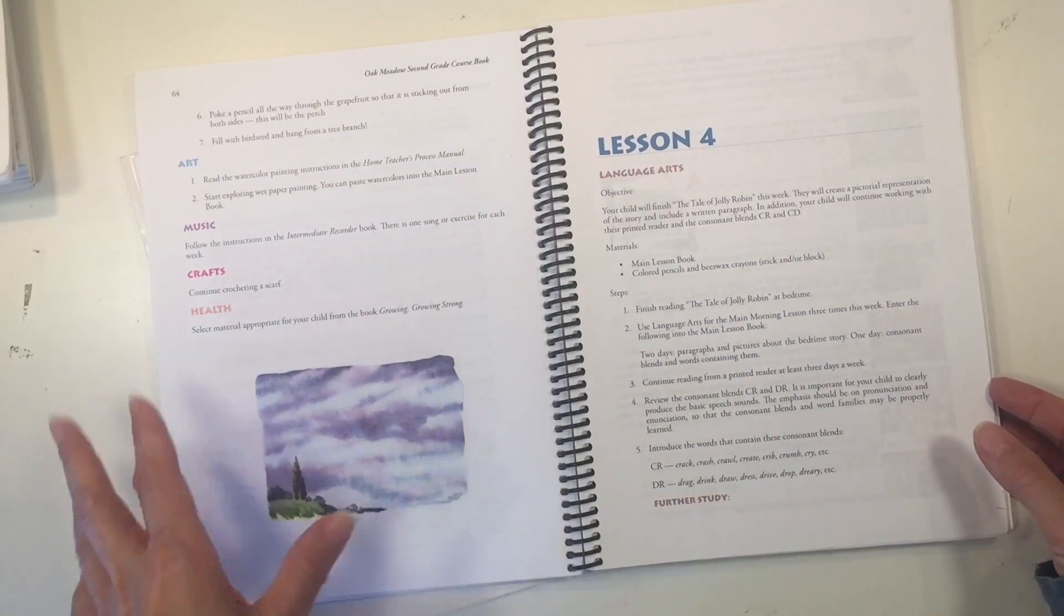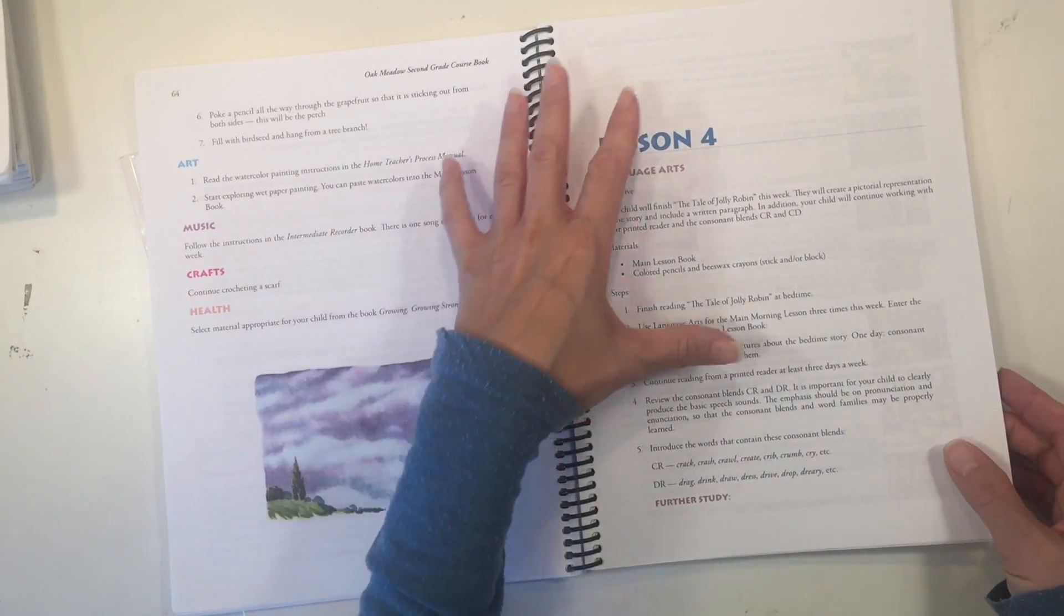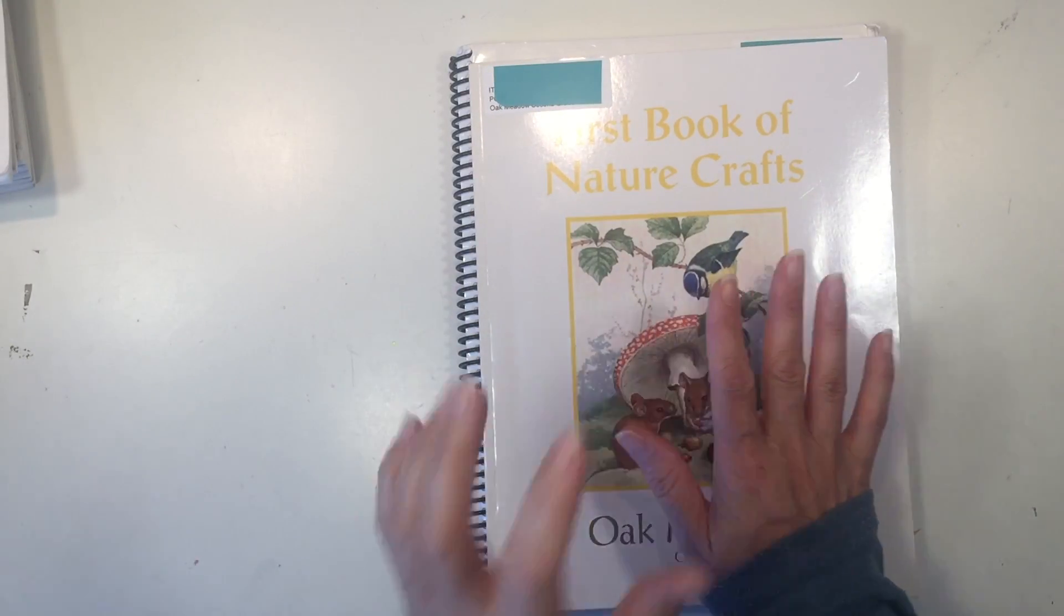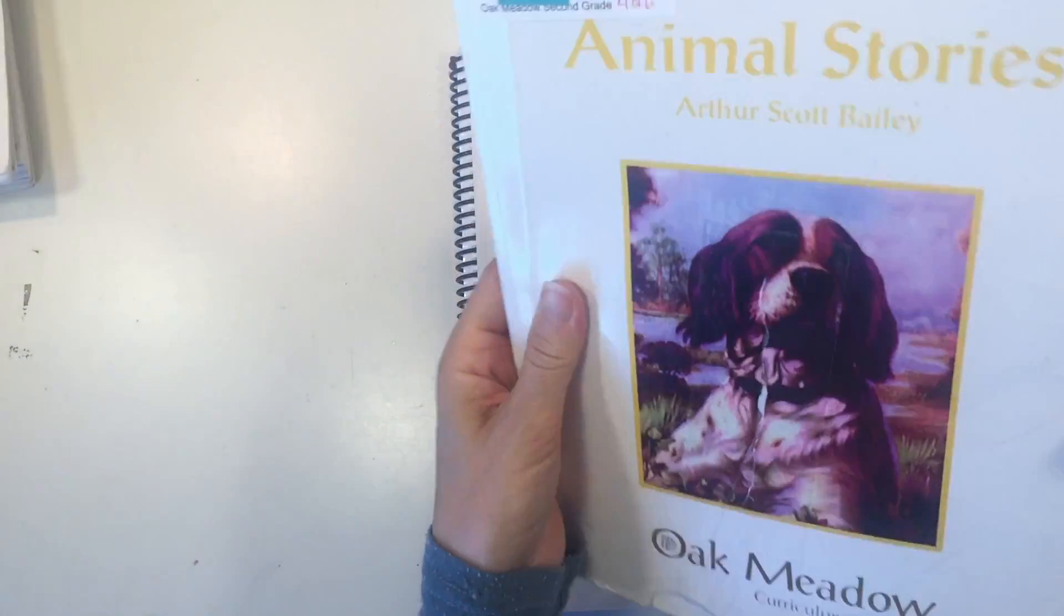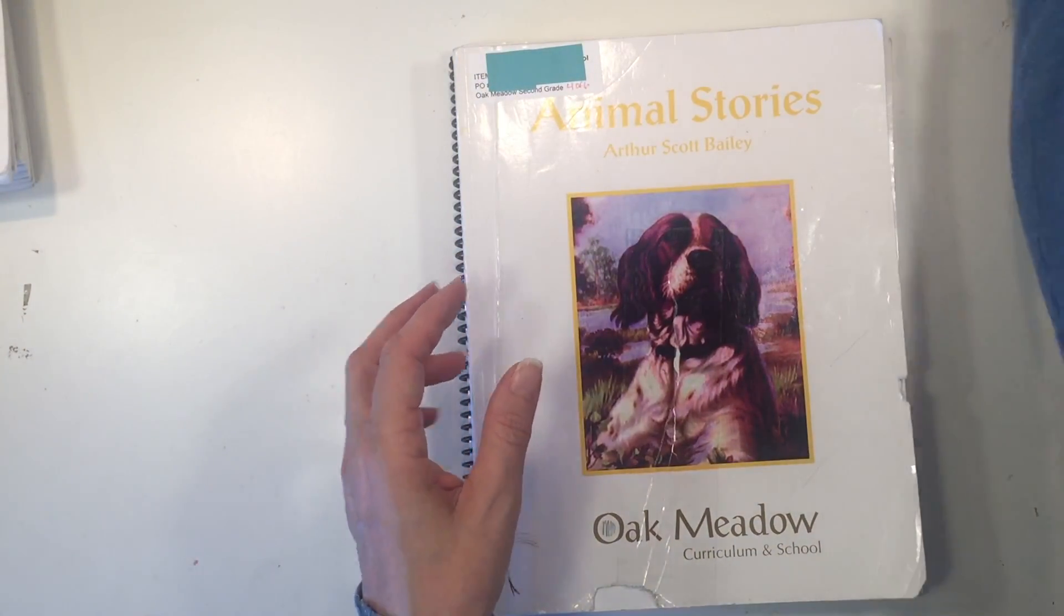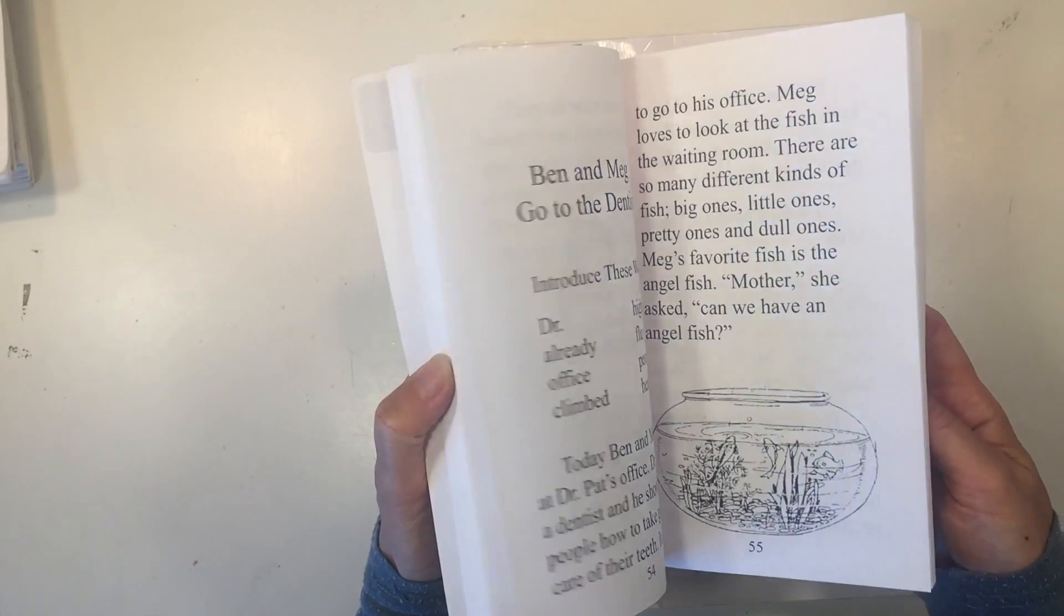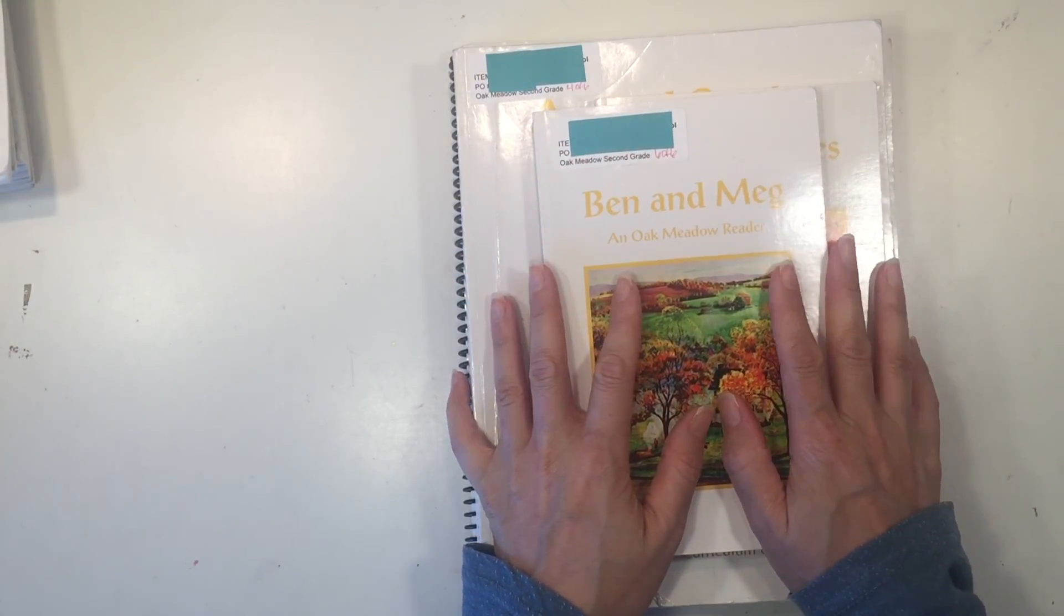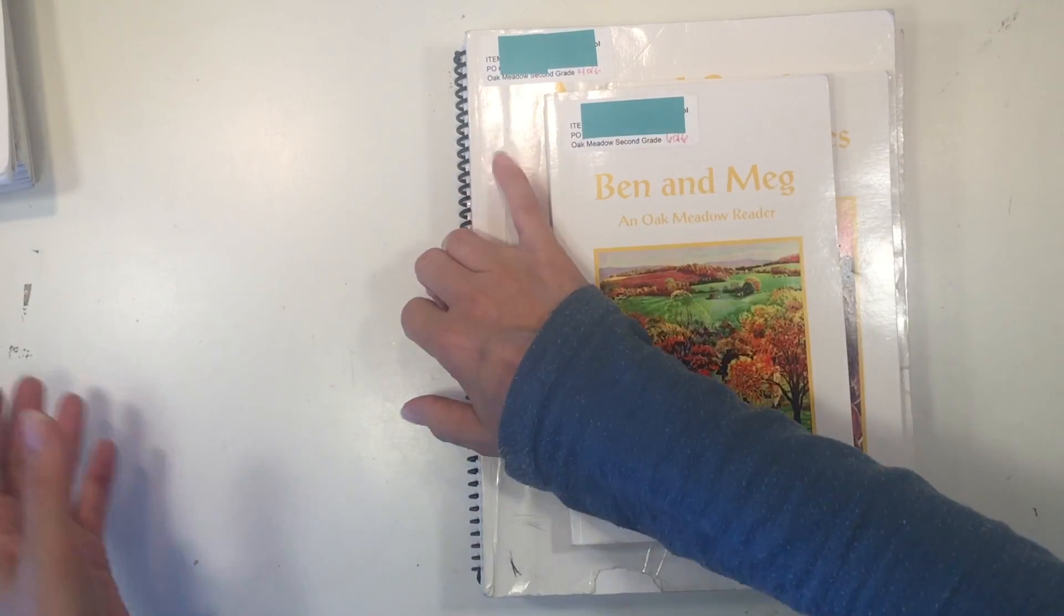All right, so this is going to go through all 36 weeks of a standard school year with all the different subjects integrated within the lessons. Then you have your additional resource books like your nature crafts, so this will be your craft book. You also have a nice chunky animal stories book, which is a great addition, as well as these two books here, Just So Stories and Ben and Meg, which is a reader for the young child. The book that I am missing possibly is the health book, and that would typically come with the updated curriculum as well.